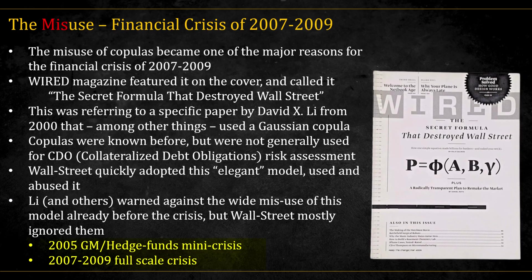Ironically, the Gaussian copula was accused of two opposite sins. In 2005, it was said to overestimate correlations, causing big hedge fund losses when markets didn't crash together. Then in 2007, it was blamed for underestimating correlations when everything did crash together.